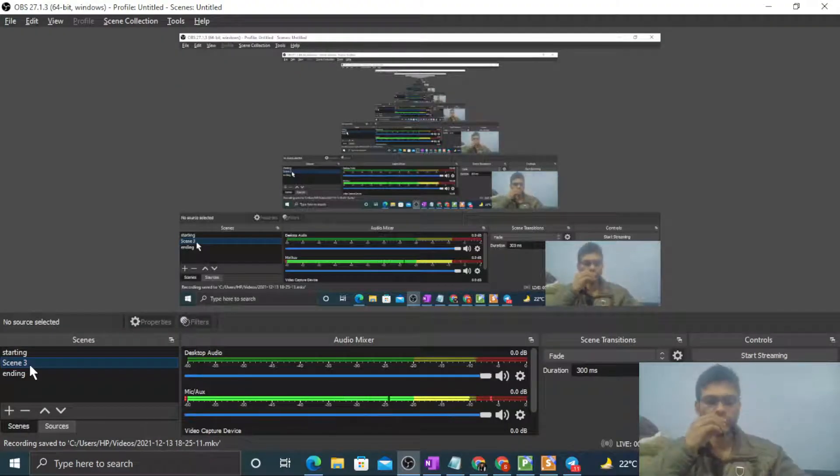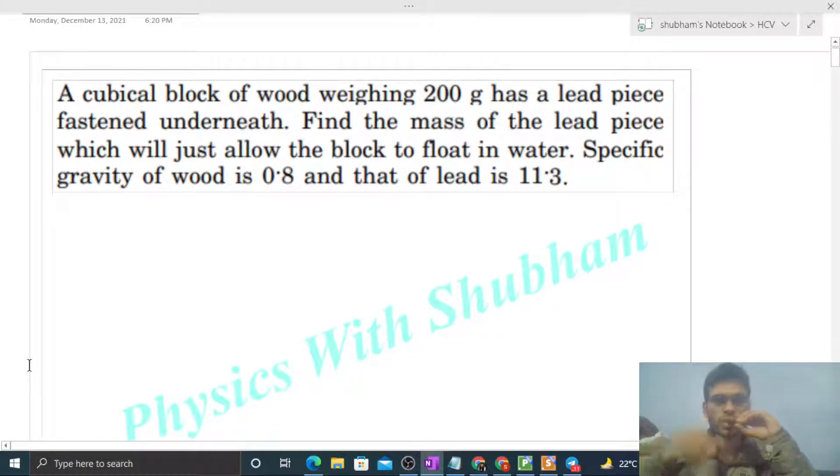Okay, hi everyone. So today let's discuss one interesting problem. It says a cubical block of wood weighing 200 gram has a lead piece fastened underneath. Find the mass of the lead piece which will just allow the block to float in water. Specific gravity of wood is 0.8 and that of lead is 11.3.